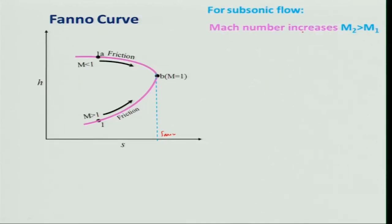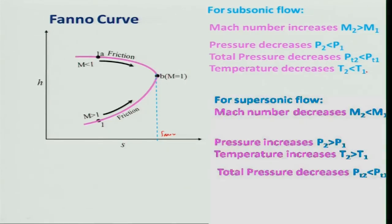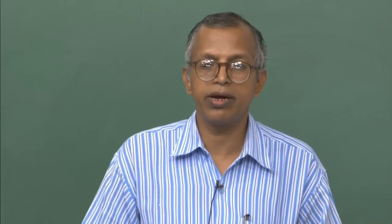To summarize: for subsonic Fanno flow, Mach number increases (M2 > M1), pressure decreases, total pressure decreases, and temperature decreases. For supersonic Fanno flow, Mach number decreases (M2 < M1), pressure increases (P2 > P1), temperature increases, and total pressure decreases in both cases. With this, I will stop. If you have any questions, we can discuss. Thank you very much.